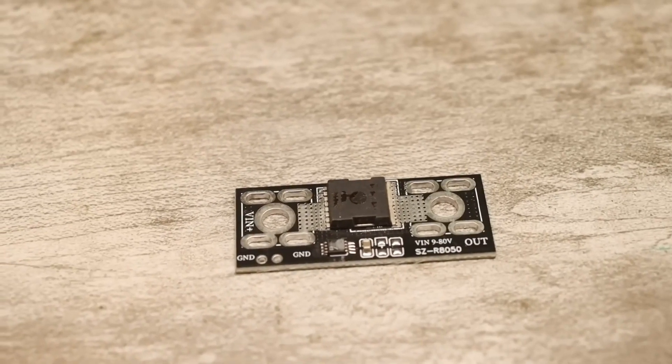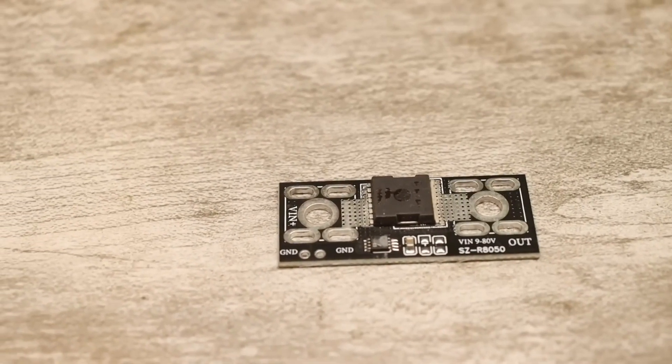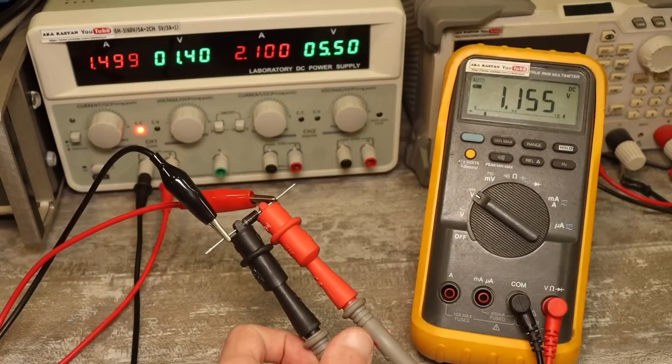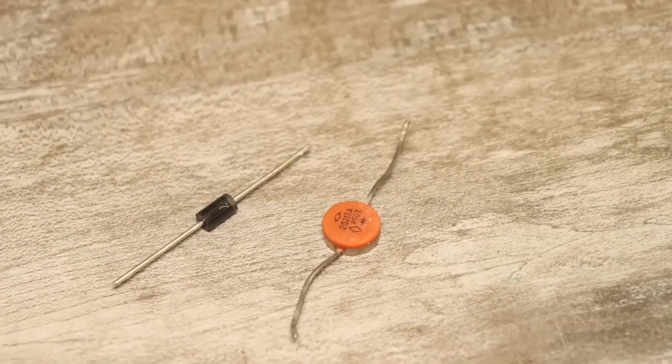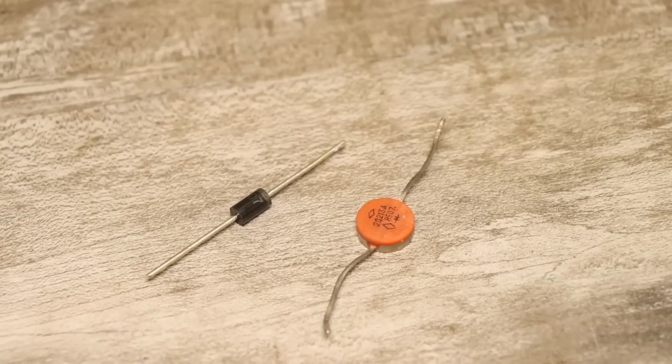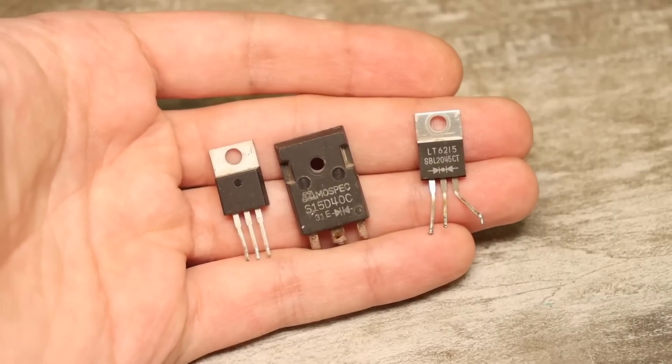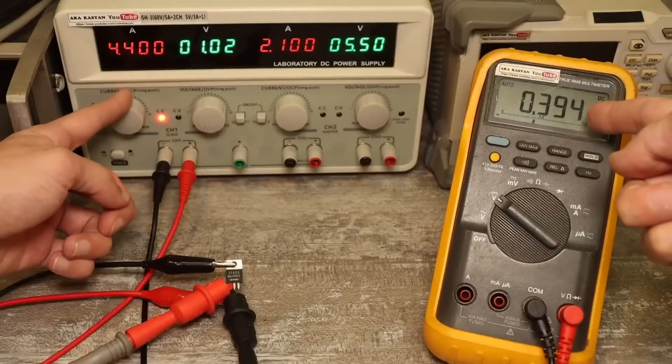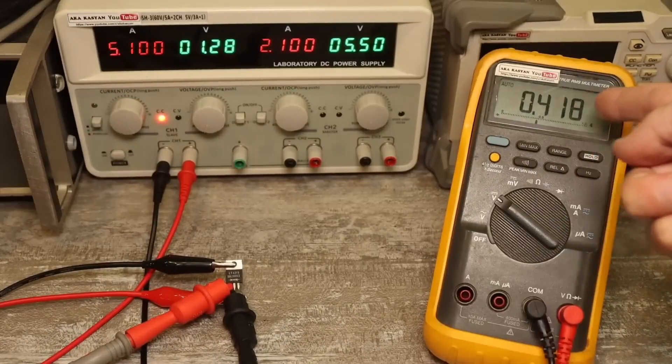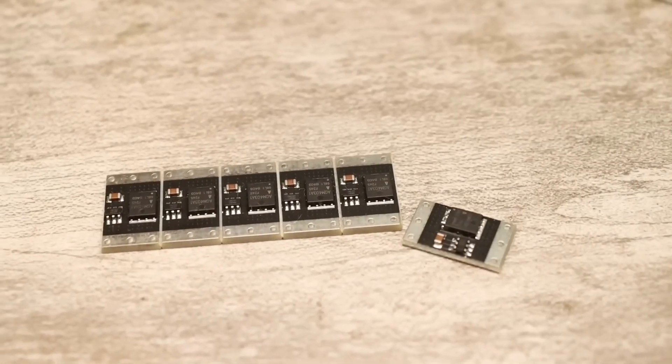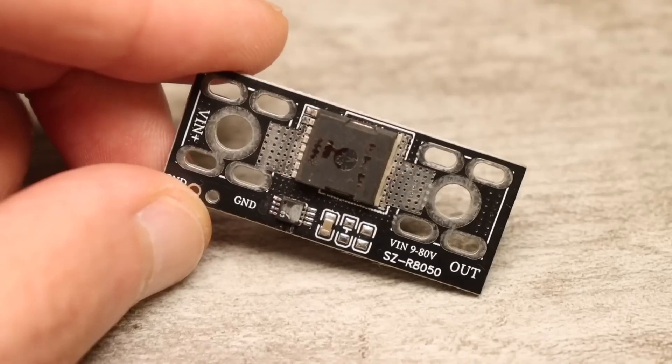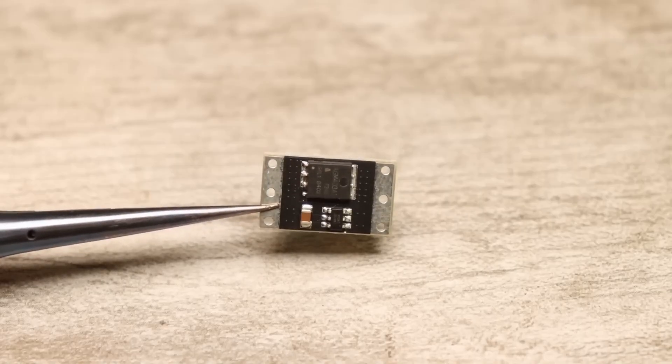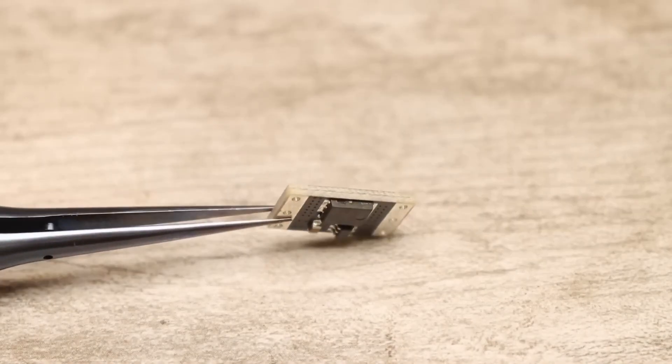The ideal diode. You've probably heard about them. The whole point is that regular diodes have losses at the junction, and as the current increases, these losses go up. These losses cause the diode to heat up and reduce the overall efficiency of the system. Even Schottky diodes, which have a small voltage drop at the junction, still heat up. And that's all because, as I mentioned earlier, as the current increases, the voltage drop also increases. An ideal diode is, in fact, a field-effect transistor operating in switching mode, which is often controlled by a specialized microchip. This chip ensures the key is fully and properly turned on when needed, and reliably turned off as well.